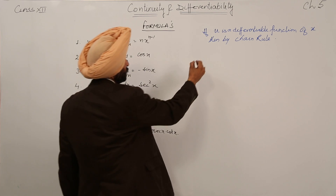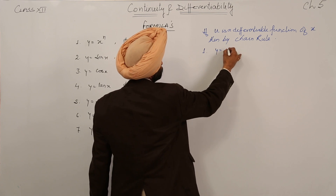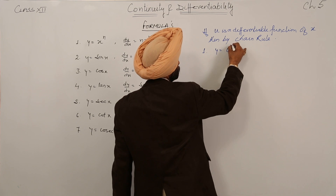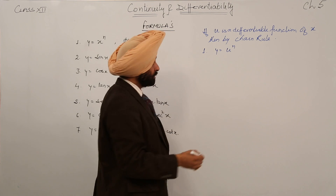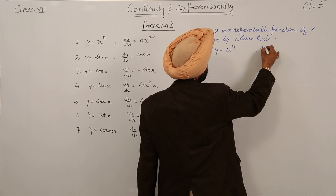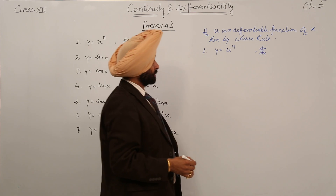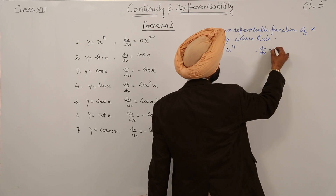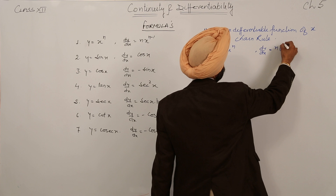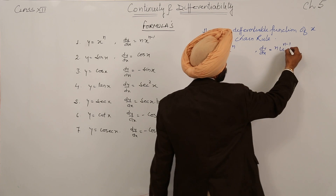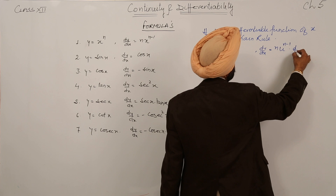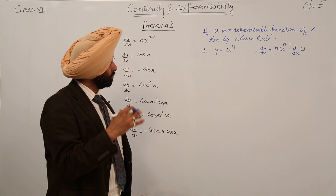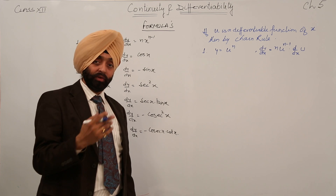Number 1: y is equal to u raised to power n. Now this becomes dy/dx is equal to n times u raised to power n minus 1, into d/dx of u. The power comes in front as n, the power reduces by 1, and then we take the derivative of u.